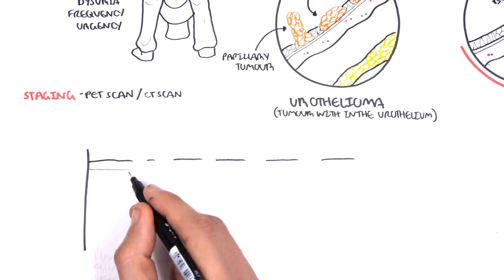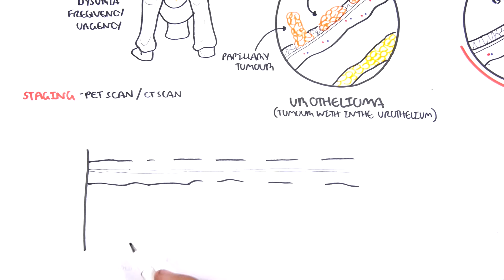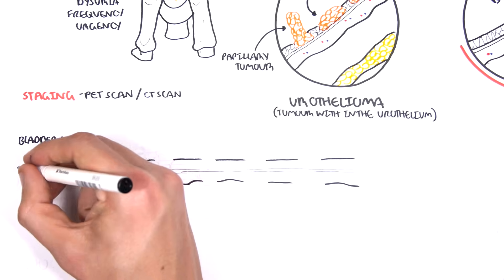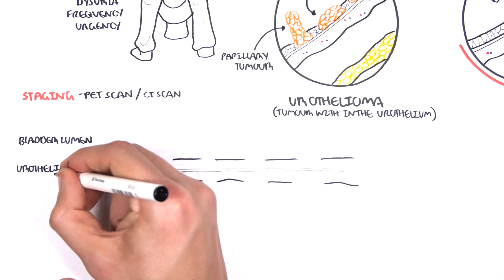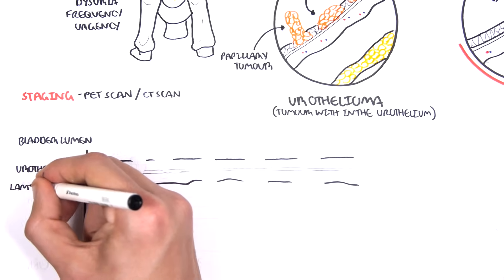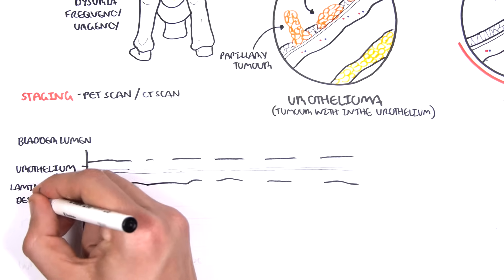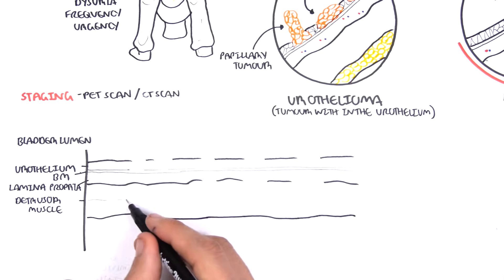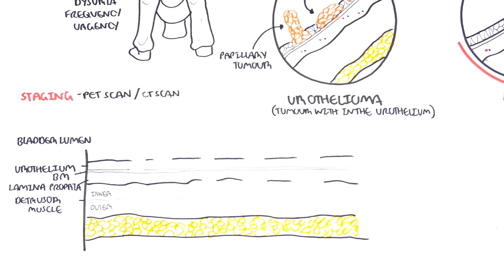So let us recap the layers of the urinary bladder. Here on the top is the bladder lumen, again which stores urine. The urothelium, which is composed of the transitional epithelial cells. Below this is the basement membrane, the lamina propria under it, and then you have the muscle layer called the detrusor muscle. And there's an inner and outer part, or a superficial and deep. Below the detrusor muscle is the adventitia, which is the fat layer.